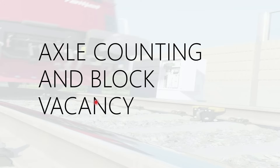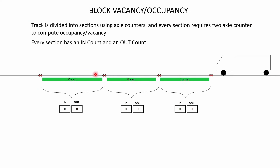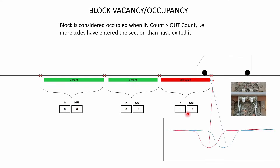Now, axle counting and block occupancy — how does that work? The track is divided into sections using axle counters. Every section requires two axle counter heads or sensor points to compute occupancy and vacancy. Inside the evaluator or processor, it maintains something called an in-count and an out-count. As a wheel steps onto the axle counter, there are actually two sets of coils — the first coil registers the change in magnetic field, then the second coil registers it, and based on that sequence the axle counter determines that a wheel has entered the section.